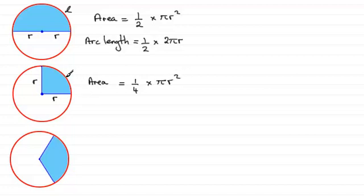And the arc length L, let's just put that in here, arc length, well that's just going to be a quarter, again, of the circumference, a quarter of the circumference 2πr.